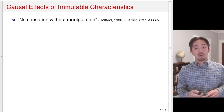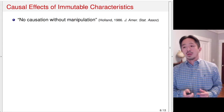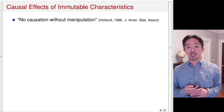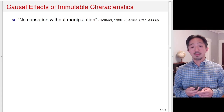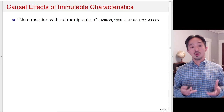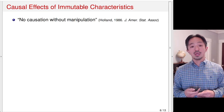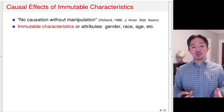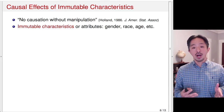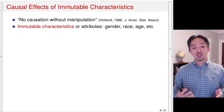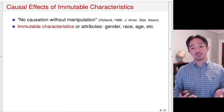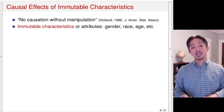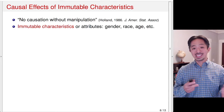Now, I'd like to discuss the causal effect of immutable characteristics. Paul Rubin, in his famous 1986 paper in the Journal of the American Statistical Association, said: no causation without manipulation. That is, we cannot define the causal effect of a variable if we cannot imagine manipulating that variable. What this means is that immutable characteristics such as gender, race, or age are, from this point of view, impossible to define causal effects for, because it is difficult for us to think about manipulating gender, race, or age — unlike sending canvassers or giving a medical treatment, which are easy to imagine manipulating.